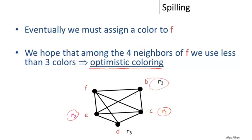In this case, optimistic coloring will not work. In fact, F had more than K neighbors, and after we color the subgraph, it turns out that those neighbors are using all K—in this case, three—all three of the register names. So there is no register left over for F, and we're going to have to actually spill it and store it in memory.